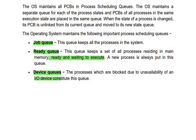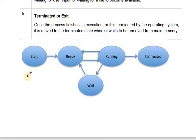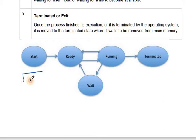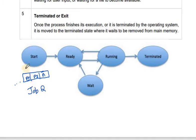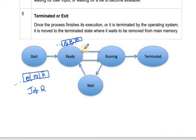We are going to discuss the process life cycle. In the ready queue, you can see the start phase — suppose P1, P2, P3, P4 and so on. This is the job queue, where processes form a chain from the start. The ready queue contains processes that are ready for execution by the CPU — for example, P1, P3, P5 and so on.